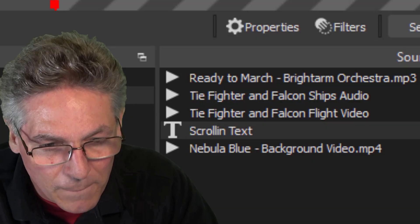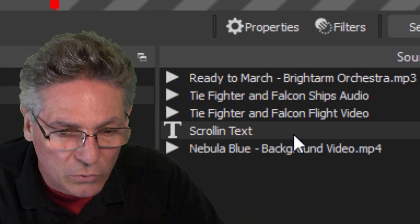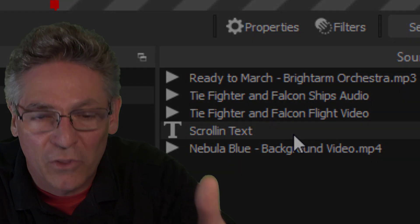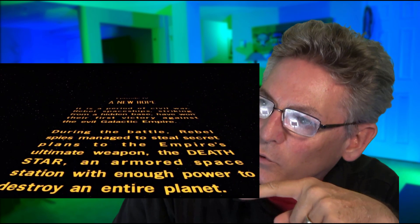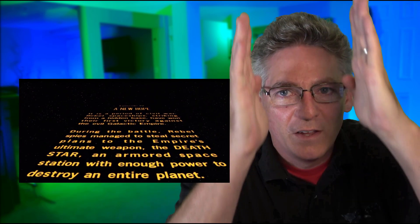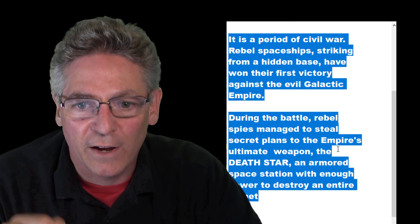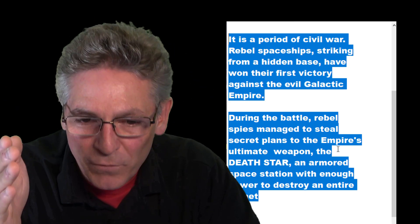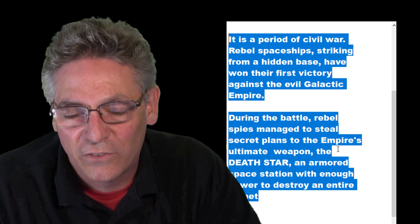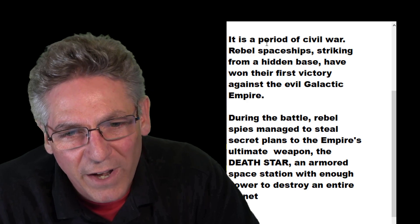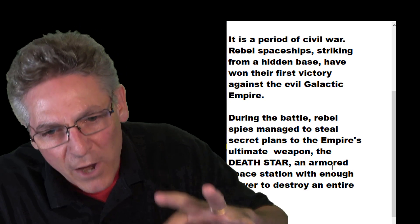Now let's go into the text source. There are two considerations. First, if you look at a screen grab from the Star Wars movie, the text is justified — aligned left and right like a newspaper column. Unfortunately, that doesn't exist in the OBS text source, so I manually line-wrapped the text in a text file to get as close as possible. Try to keep it around four or five words per line and experiment a bit.